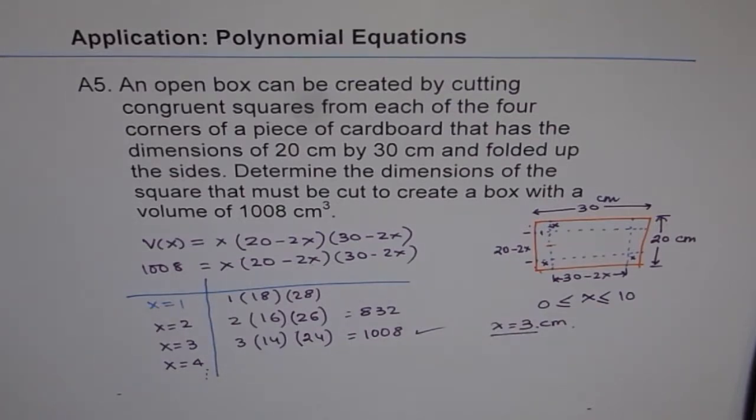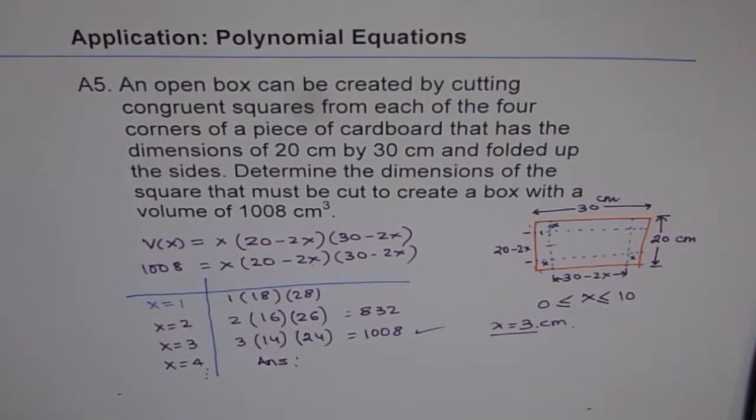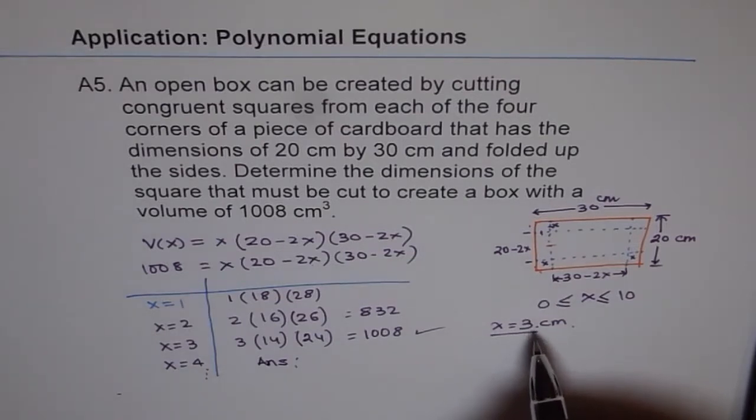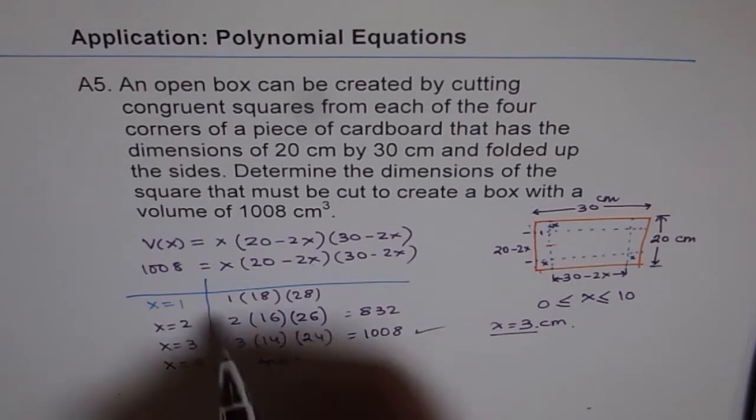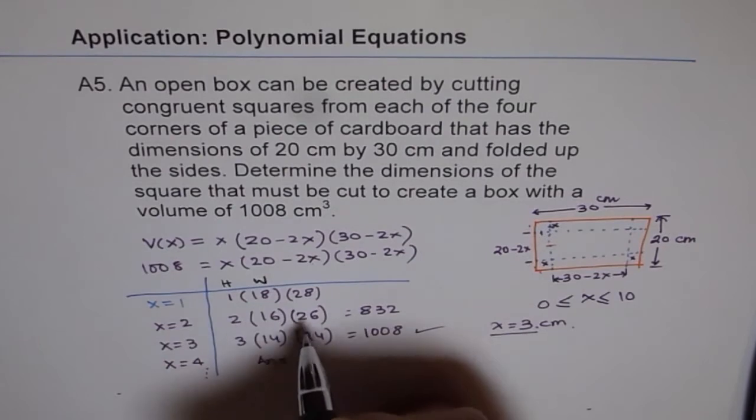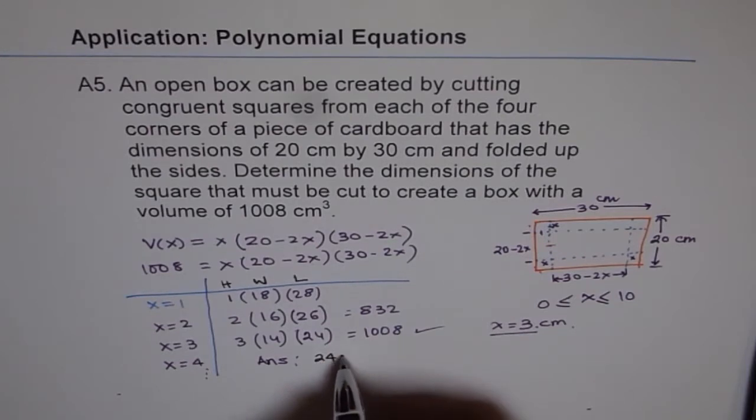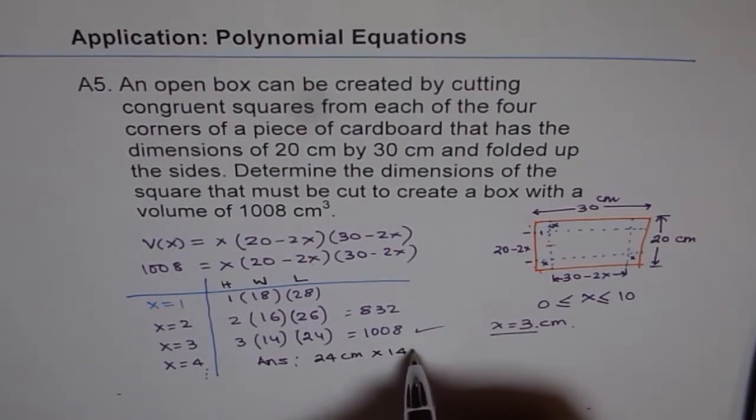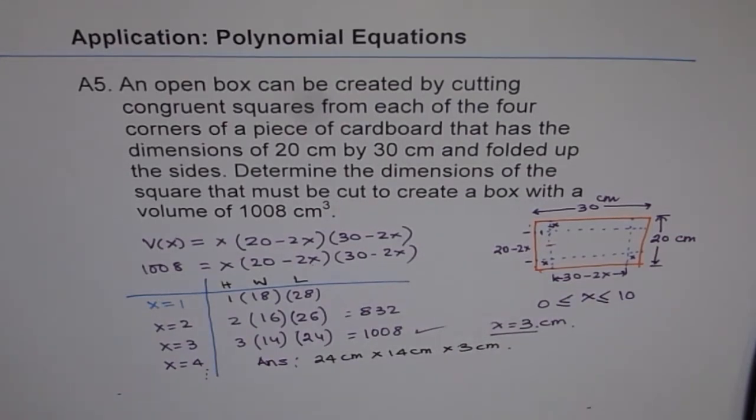Now we know x is 3, but 3 is not the dimension. So we will say, well, now we write down the answer. And let me use differently to write down the answer. And that is since x equals to 3, we can say height is 3 and length is 30 minus. Here we have written these are my dimensions. So dimensions are: this is my height, and this is my width, and that is my length. So I can write the dimensions are 24 centimeter by 14 centimeter by 3 centimeter.